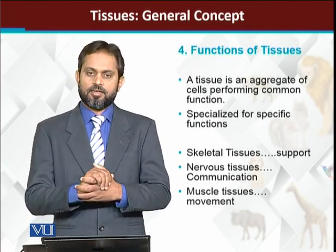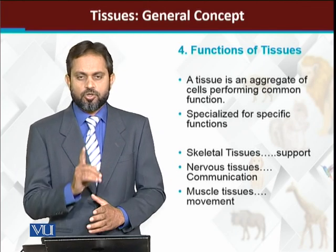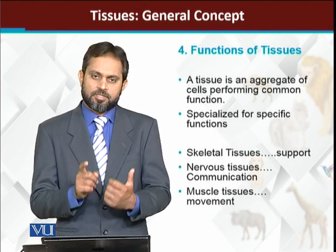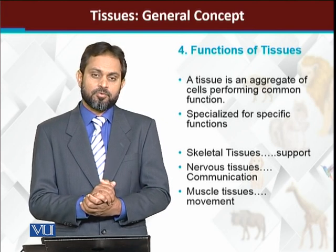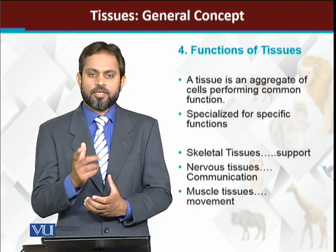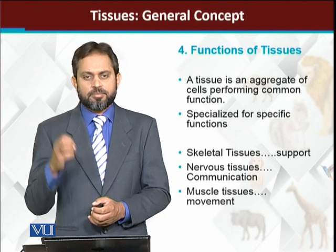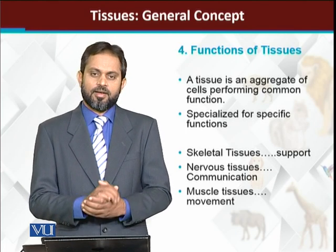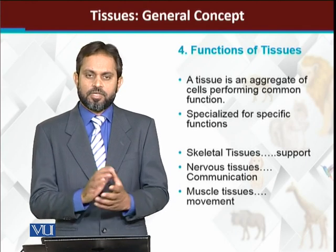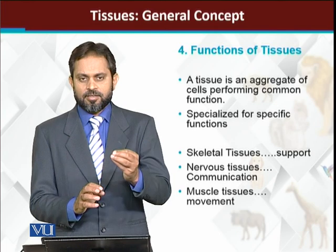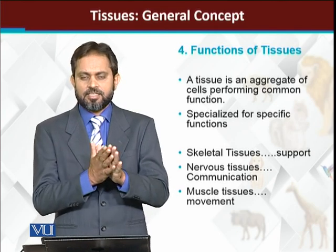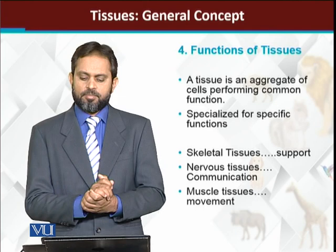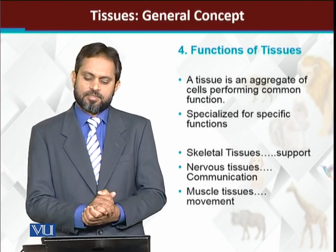As we described, every tissue performs a specific job. For example, in our stomach there are some glandular tissues whose job is to secrete enzymes and gastric juice — they have no other work. There are also muscular tissues in the stomach whose job is not to secrete gastric juice, but to mix up food through muscular movement. So every type of tissue performs a specific job and is specialized for that work.